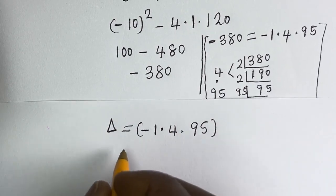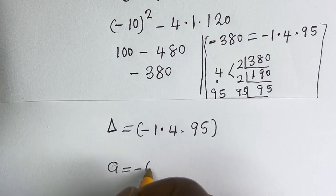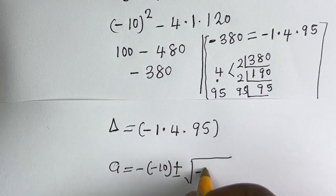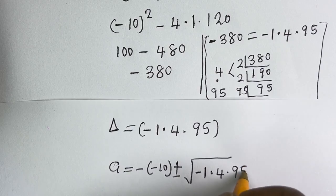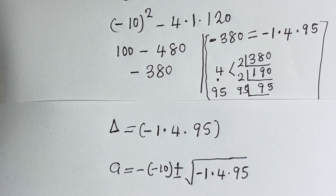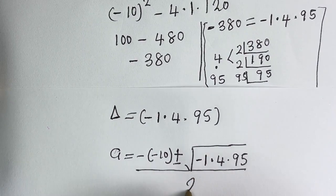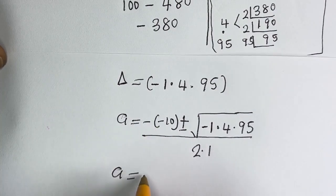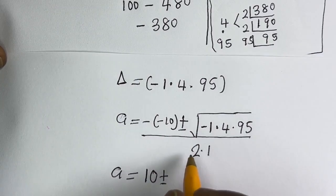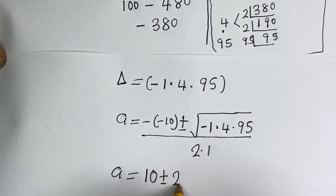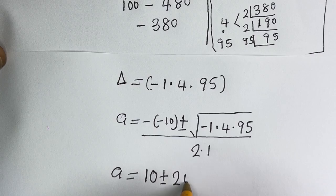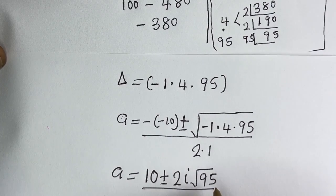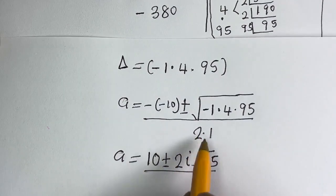Plugging into the formula, A is equal to minus (minus 10) plus or minus square root of minus 1 times 4 times 95, all divided by 2 times 1. This simplifies to 10 plus or minus 2i times square root of 95, divided by 2.